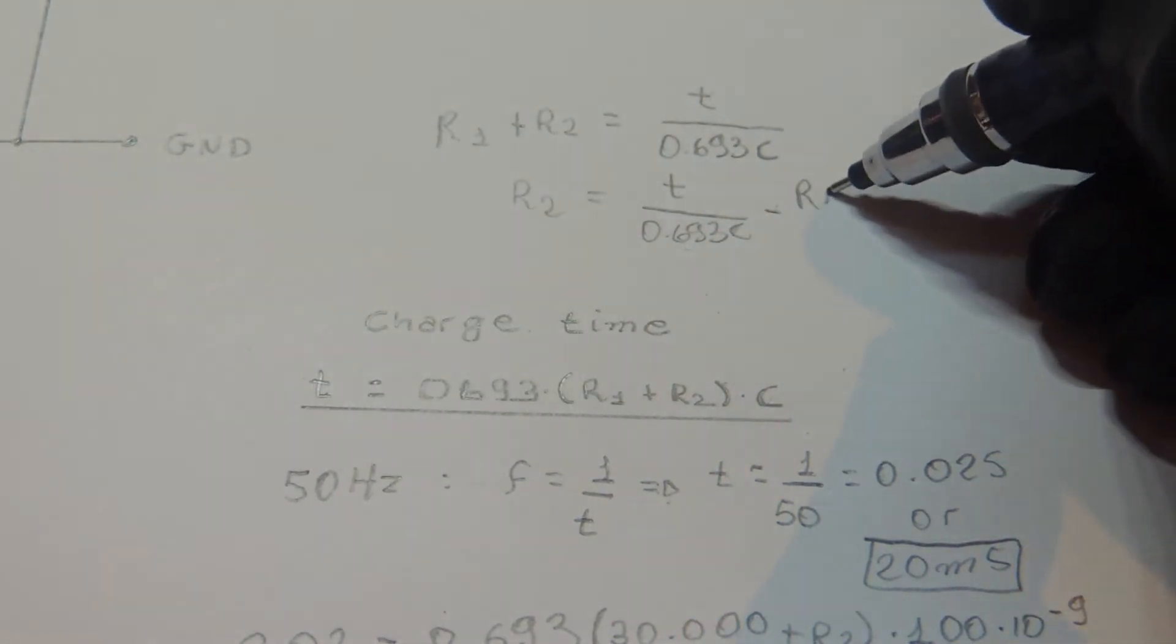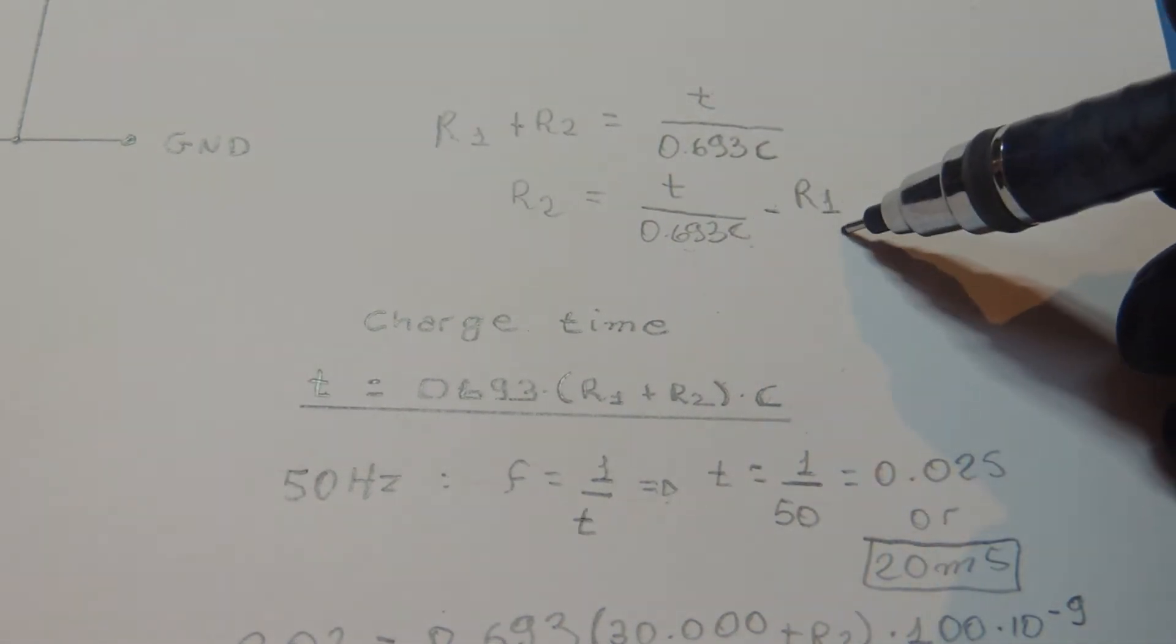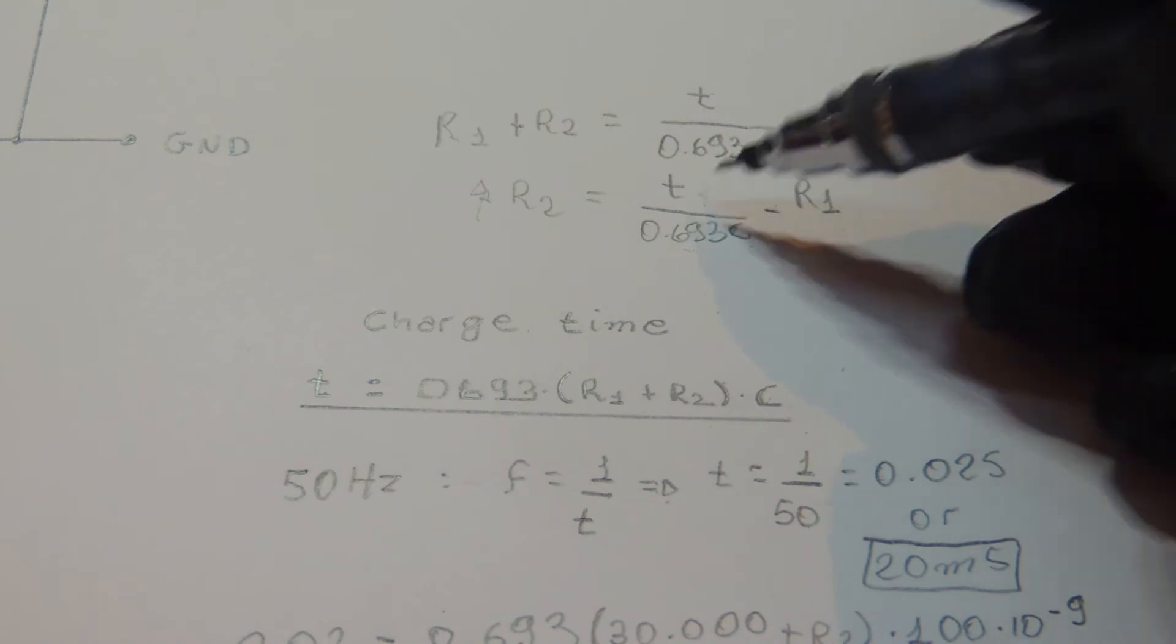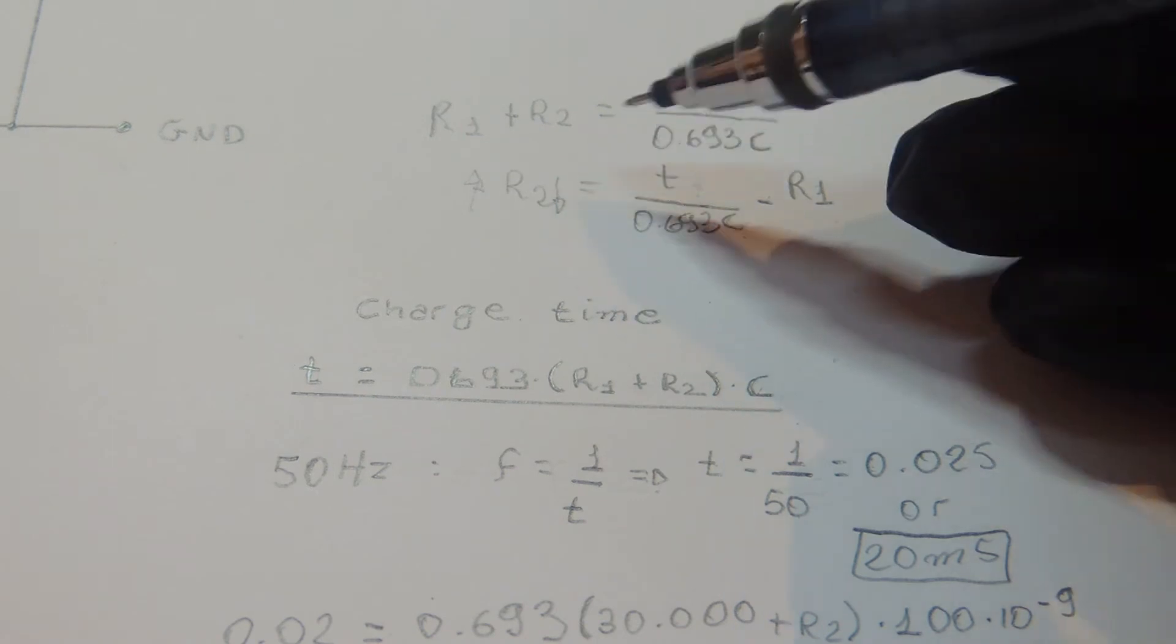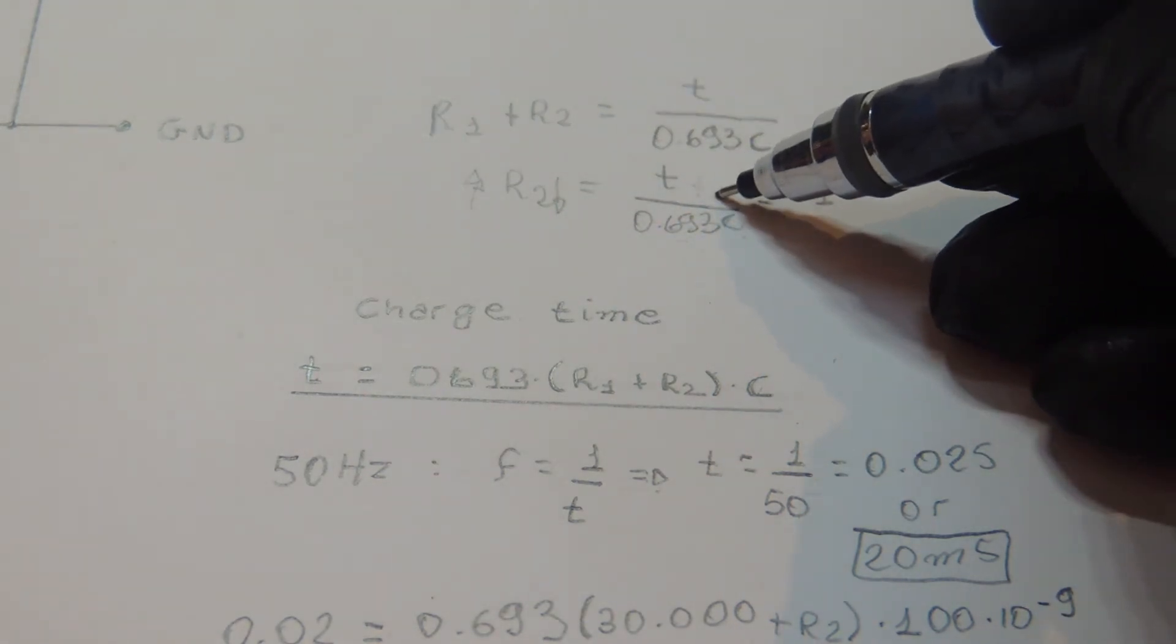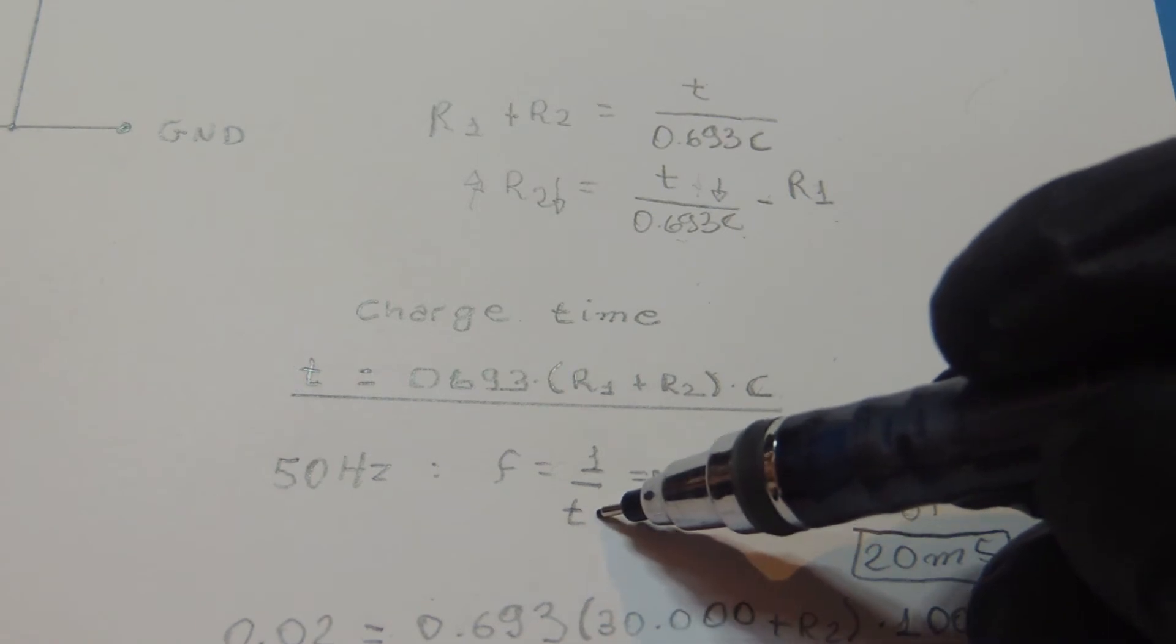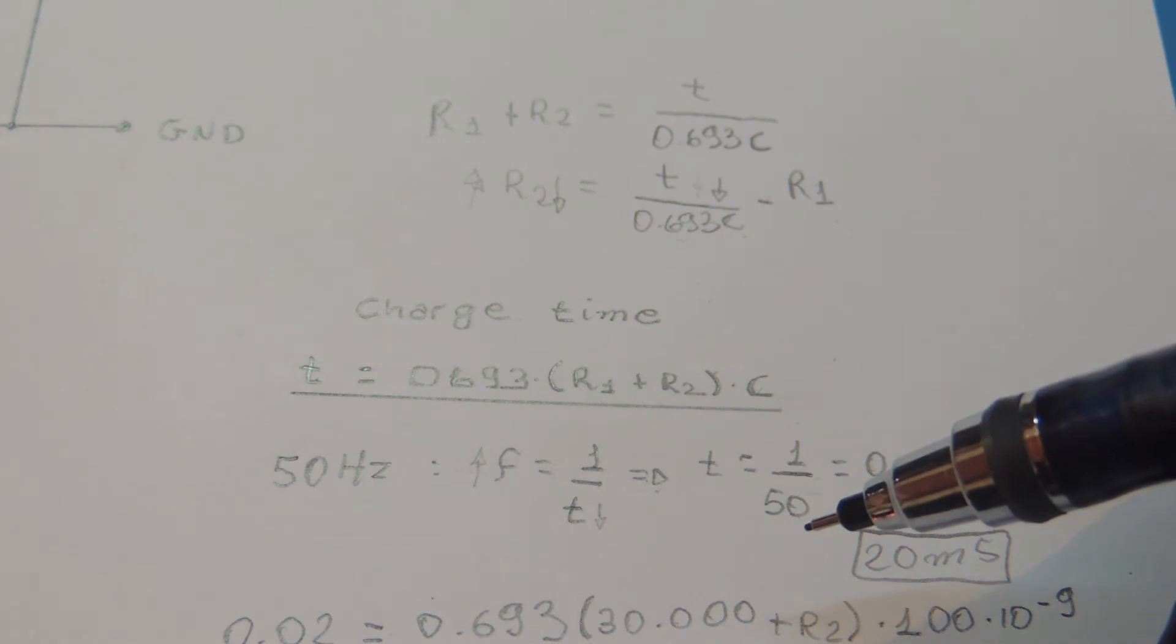Since we have got a fixed value for the capacitor and resistor, it means if we increase the value for R2, we are going to have a higher value of period. That means a lower frequency. So if we decrease the value for R2, we are going to have a lower period. Lower period means higher frequency.